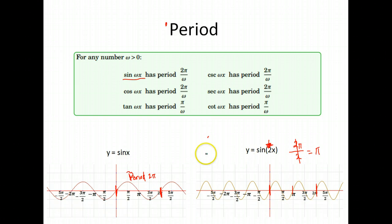And that's how we find the length of the period for sine, cosine, cosecant, and secant. Whatever that number is that's multiplied by x, you divide 2π by that number, and that tells you what your new period is.